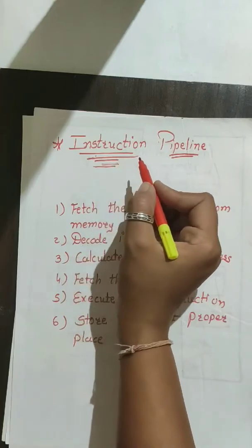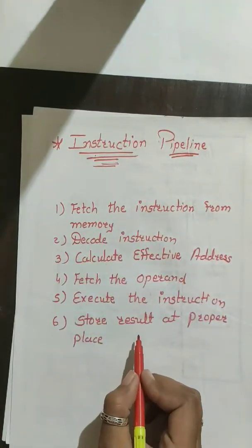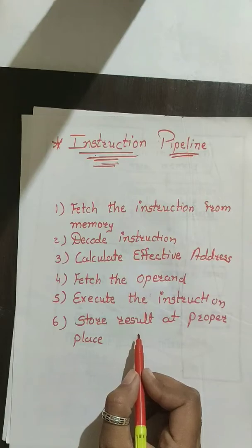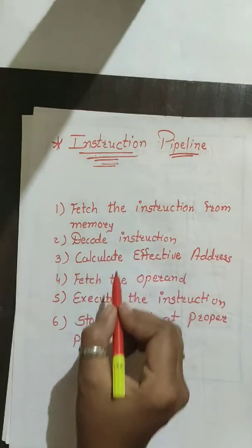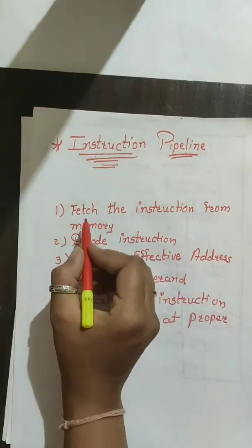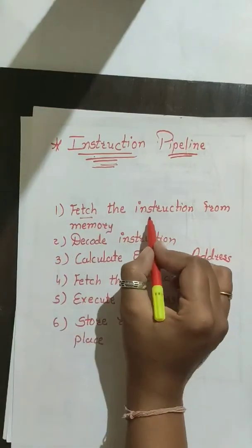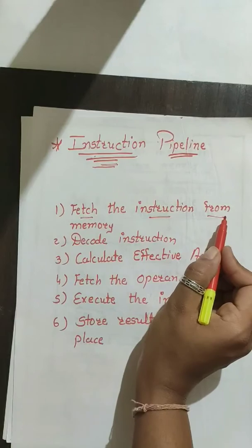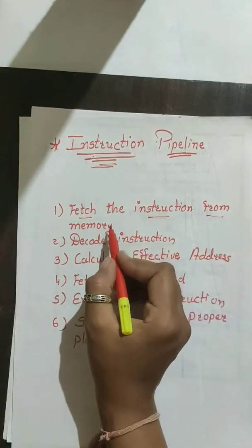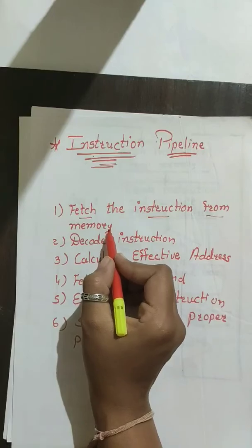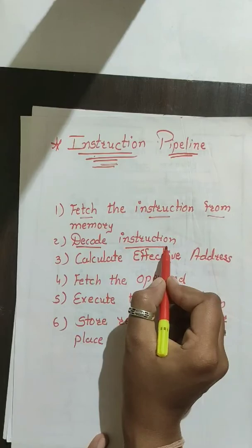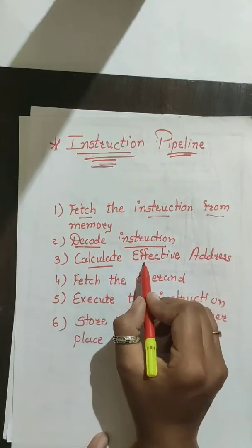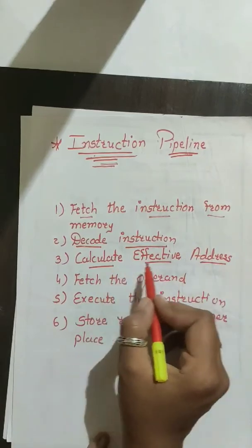First you should know what phases we need to execute an instruction. In a most general purpose computer, the computer needs to process each instruction with the following steps: First, fetch the instruction from the memory. Once the instruction has been fetched, we need to decode that instruction. After decoding, we need to find the effective address — that is, calculate the effective address.